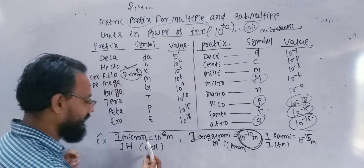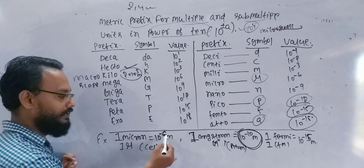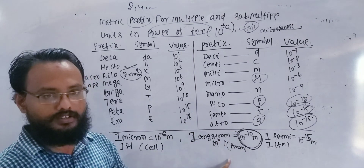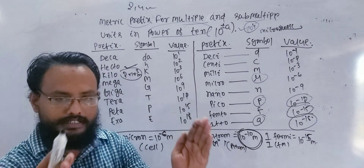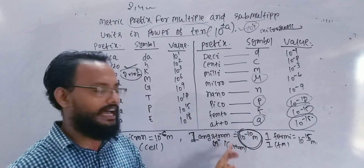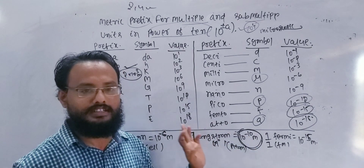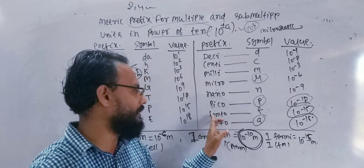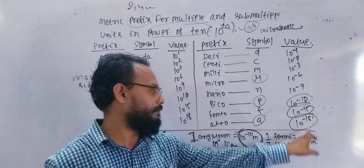You get to see the cell A — 10 to the power minus 6 meter. You get to know the cell. You have to be able to make the cell A, 10 to the power minus 6 meter.